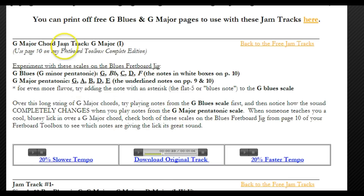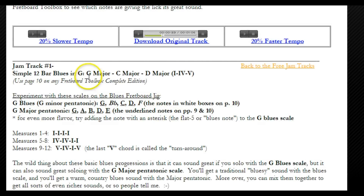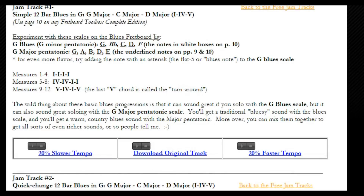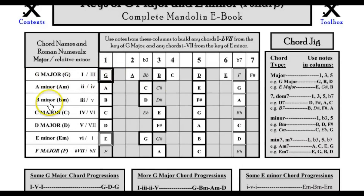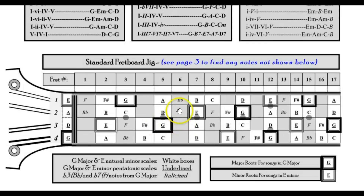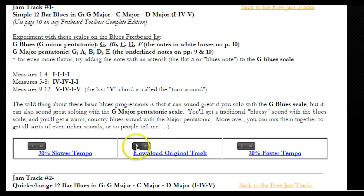Playing just G major the whole time sounds okay but kind of boring. If we look at a track like G major, C major, D major — a 1, 4, 5 progression — we can play any of those three scales over it and get a different sound. The major and major pentatonic will sound pretty similar, while the blues scale will sound way different. On the Toolbox, G major is the 1 chord, C major is the 4, D major is the 5. Let's hear the G major scale — G, A, B, C, D, E, F sharp — played over that chord progression.